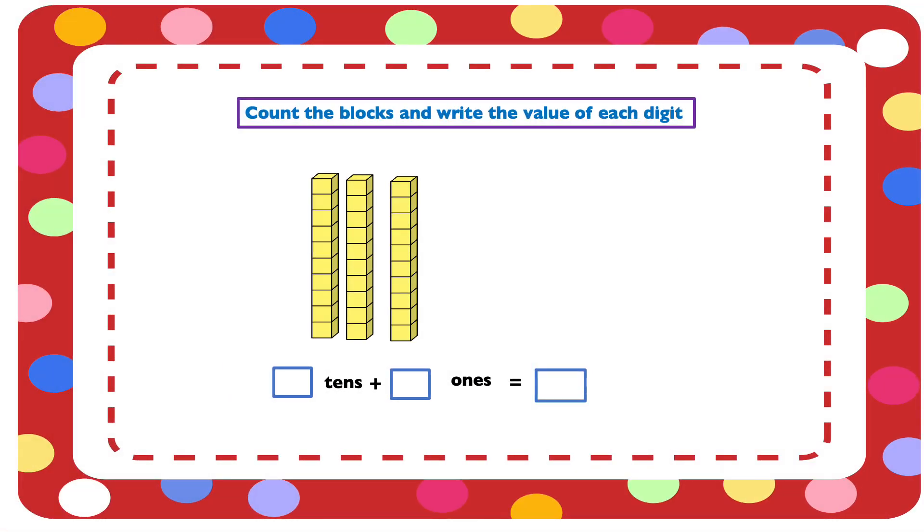Count the blocks and write the value of each digit. Here the number of blocks is not given. So we need to count the blocks and find out the number first, and then we'll be able to know the value of each digit. Let's count the blocks.